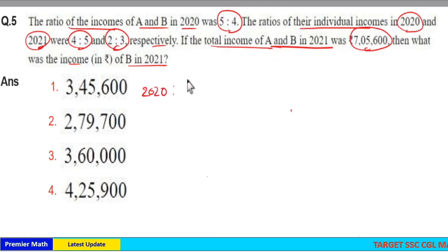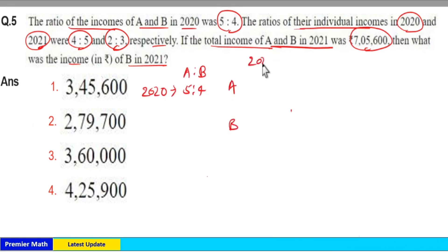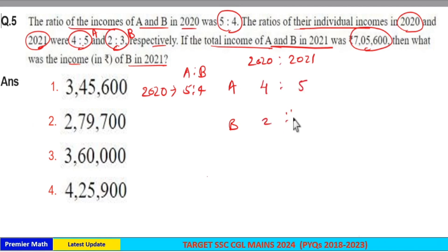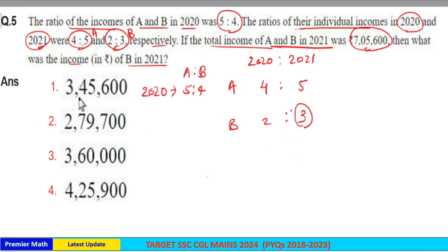In 2020, the ratio of income of A and B was 5:4. The ratio of individual incomes of A and B across 2020 and 2021 were 4:5 and 2:3 respectively — 4:5 for A and 2:3 for B. Now, the income of B in 2021 is 3 parts, so check for multiples of 3 in the options.